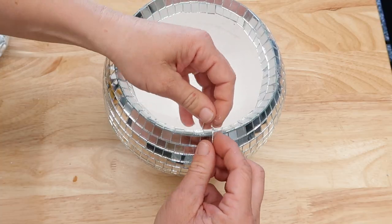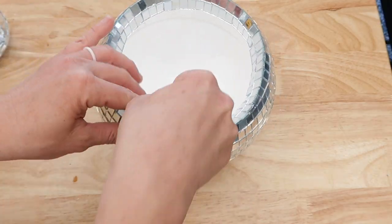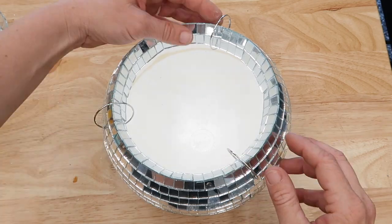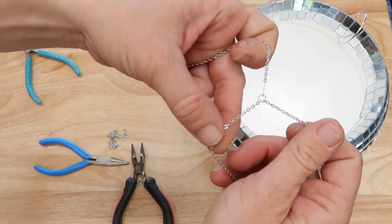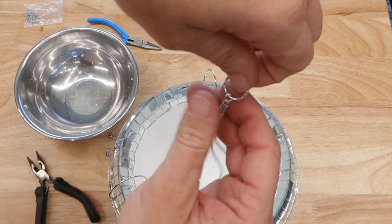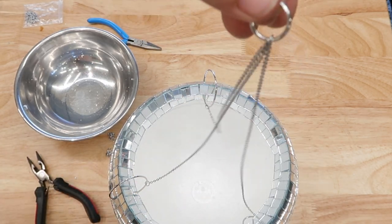I repeated all the same steps to be able to hang the disco ball just using larger size jump rings because this was a larger disco ball. I found it easier to measure out the three chains first and connect them with one jump ring, that way when it came time to construct the planter it was all done in one step.